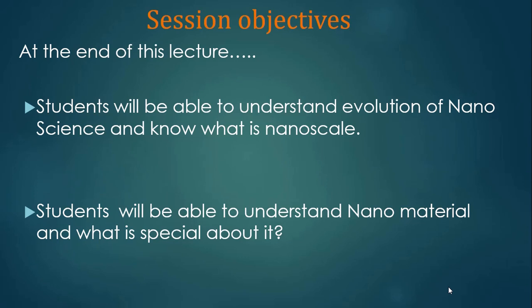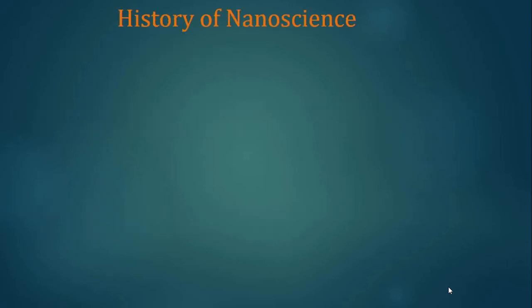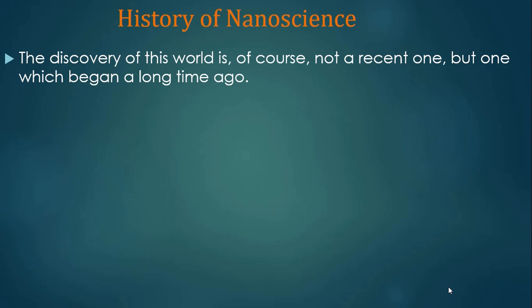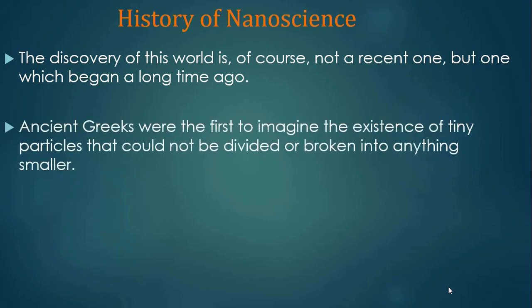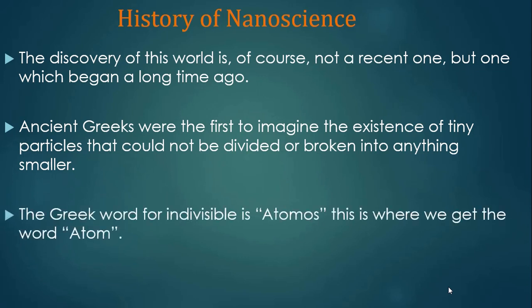Let's start with the history of nanoscience. The discovery of this world is not a recent one, but one which began a long time ago. The ancient Greeks first imagined the existence of tiny particles that could not be divided or broken into anything smaller. Greeks identified it as the atom — the smallest unit which could not be split. The Greek word for indivisible is 'atomos,' and this is where we get the word atom.